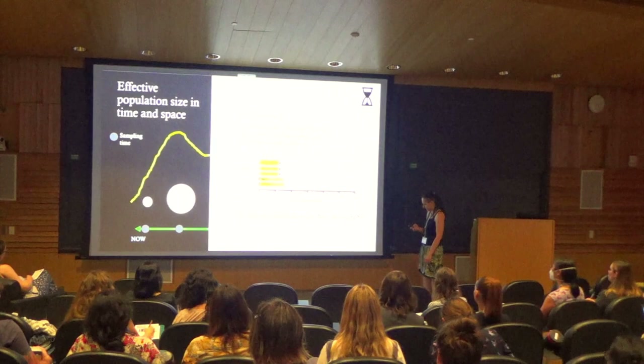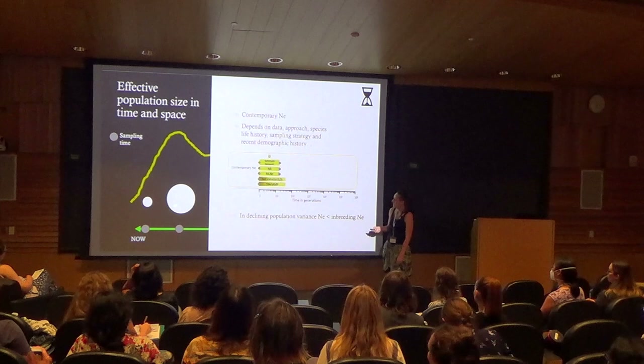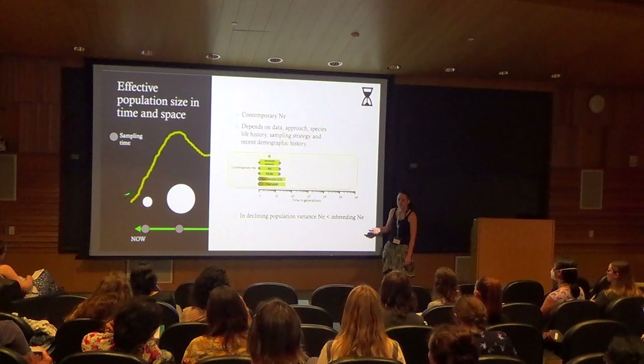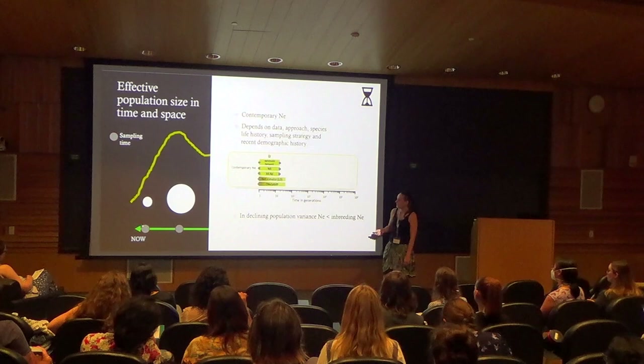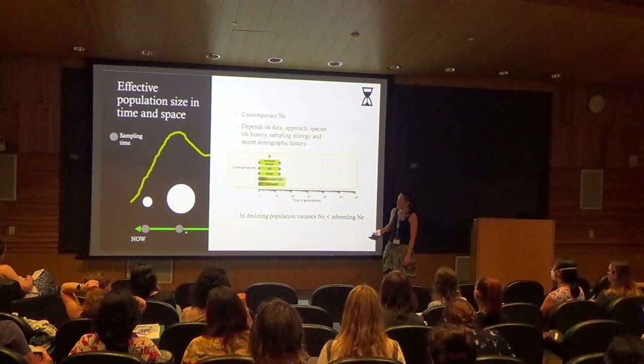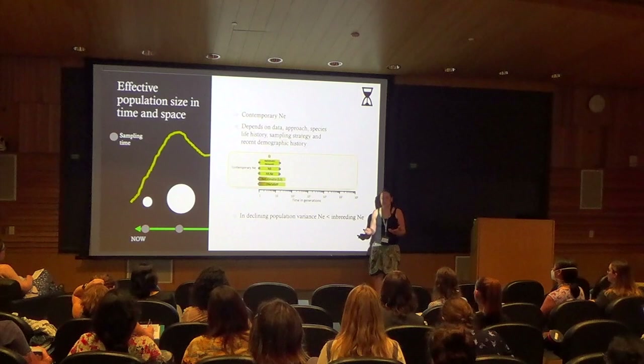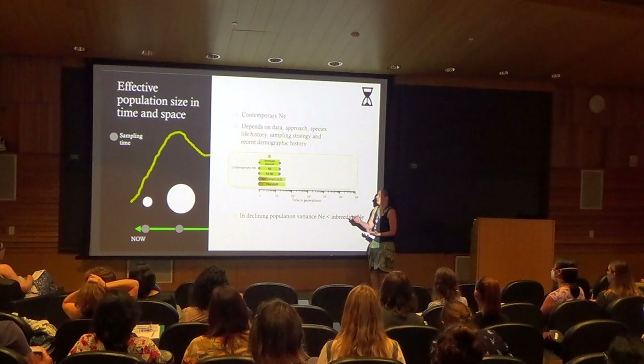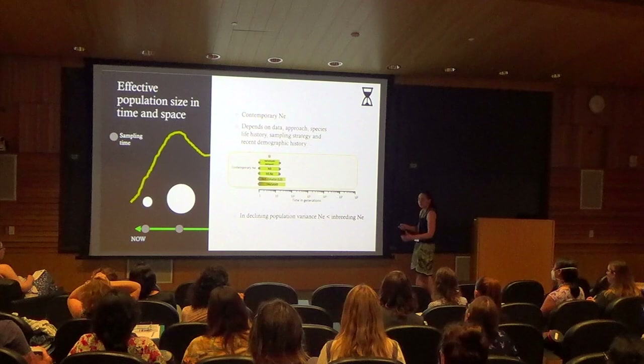To illustrate this concept, let's simplify the cartoon I made. We have a bigger population, then a smaller population, and a decline in recent times. Let's say we monitor this population and get DNA samples from now and several generations back in time. We can use several approaches to estimate contemporary Ne, and one of the most popular ones uses temporal sampling to get a temporal Ne estimate.